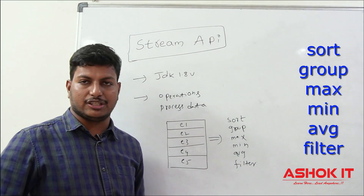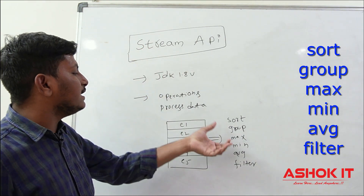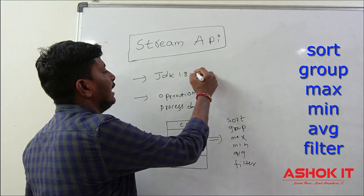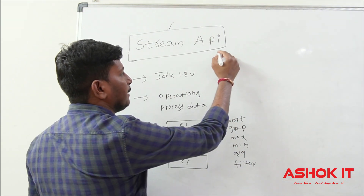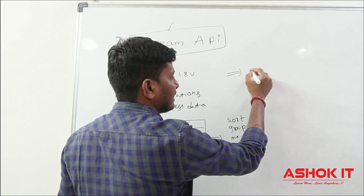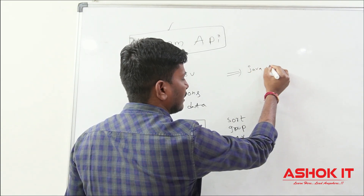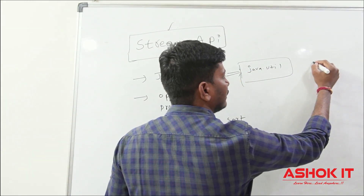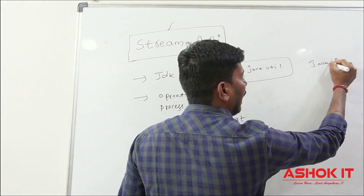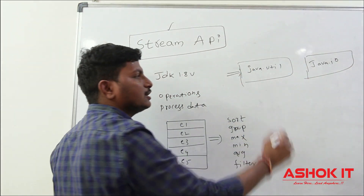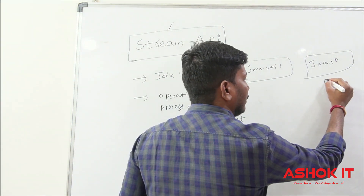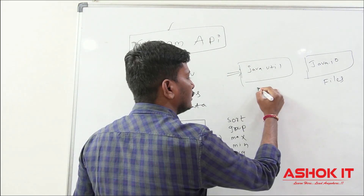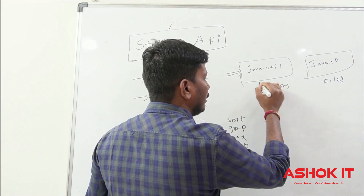In order to perform these operations we would need to write our own logic, but using Stream API we can easily perform them. JDK 1.8 introduced Stream API, which provides several interfaces, classes, and methods as part of the java.util package. There are two types of streams in Java: java.util.stream and java.io.stream. IO streams are used to deal with files and file-related operations.